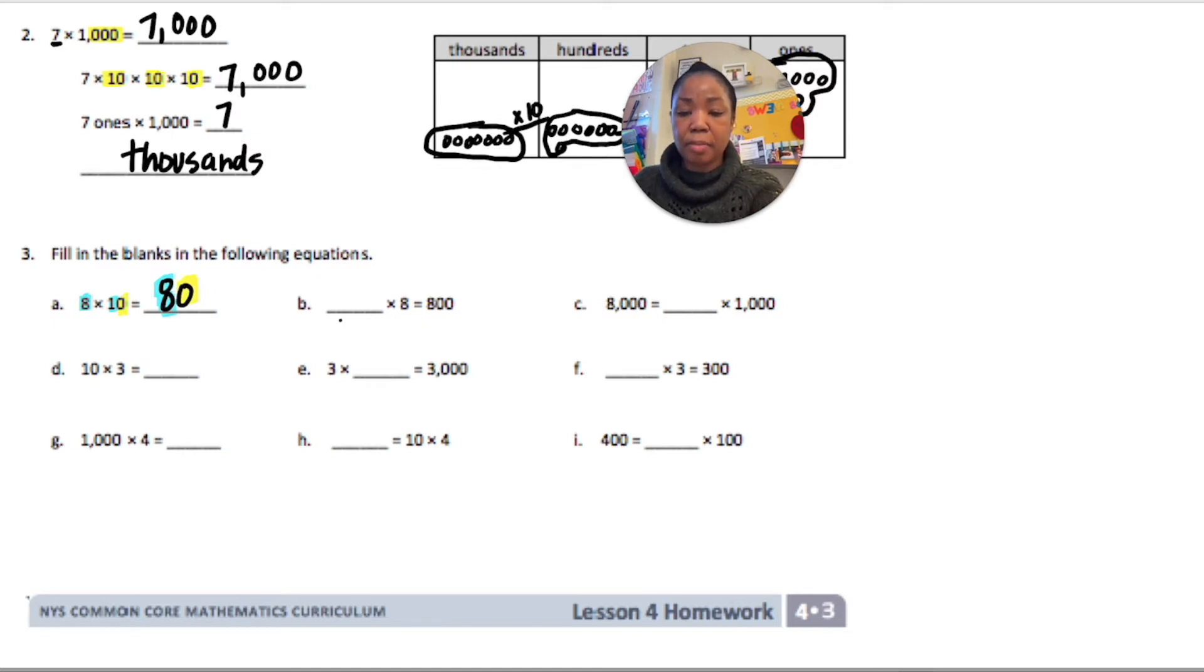Next we have some number blank times 8 equals 800. Well, that would be 100, right? Because this has two zeros. So I'm doing 8 times 1 with two zeros, which is 100. Here for C, we have 8,000 equals blank times 1,000. That would be 8 times 1,000 equals 8,000.